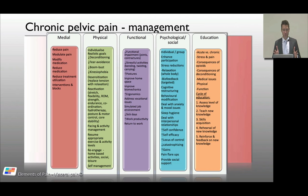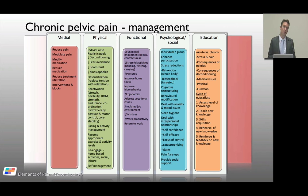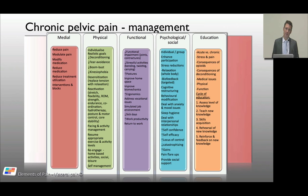Management involves a five-pronged approach: manage the medical side, modify medication and give analgesia, give interventions as short-term or diagnostic tools, focus on physical and functional goals for the patient, and address psychological aspects — cognitive behavioural therapy, cognitive restructuring, behavioural modification, self-confidence, locus of control, and pain catastrophizing. Education is vital: discuss acute versus chronic paradigms, stress and pain, and the use of opioids.